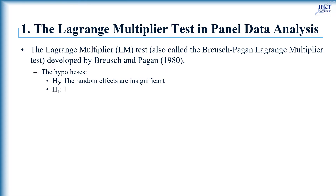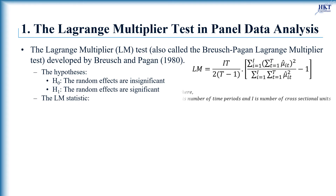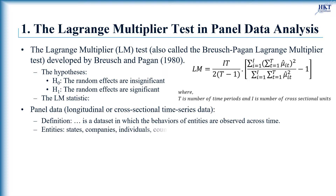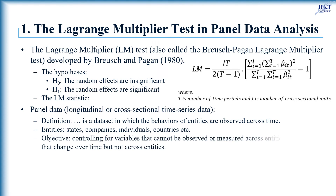Conversely, the alternative hypothesis suggests that the random effects are indeed essential and contribute significantly to the overall model fit. The LM statistic follows a chi-square distribution with one degree of freedom, because we are testing for one measure only — the variance of the random effects term.